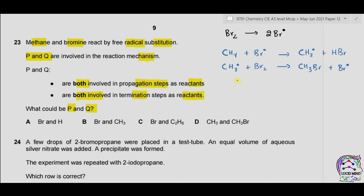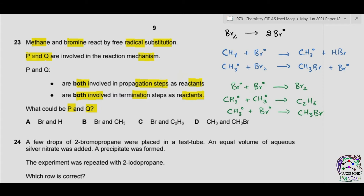In termination steps, two radicals come together to form a neutral product. CH3 radicals can combine to form an alkane, or CH3 radicals can react with Br radicals to form neutral methyl bromide. Since all radicals present in termination are also present in propagation, the correct answer is CH3 and Br.